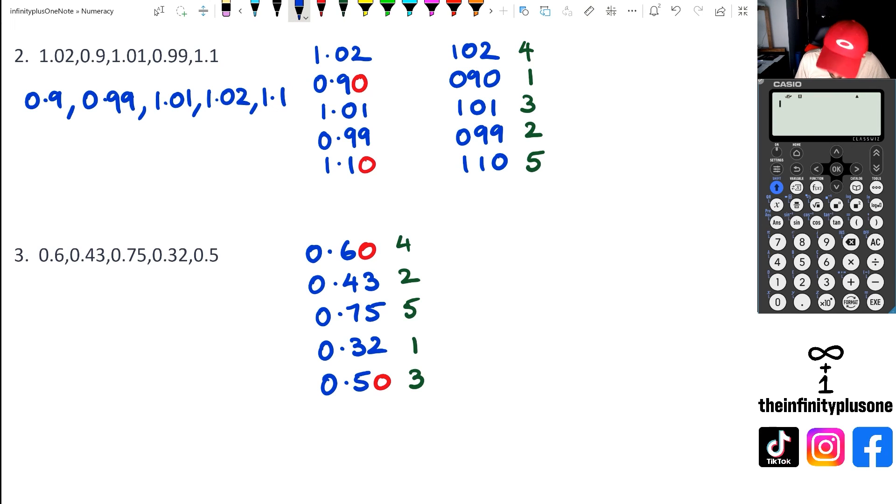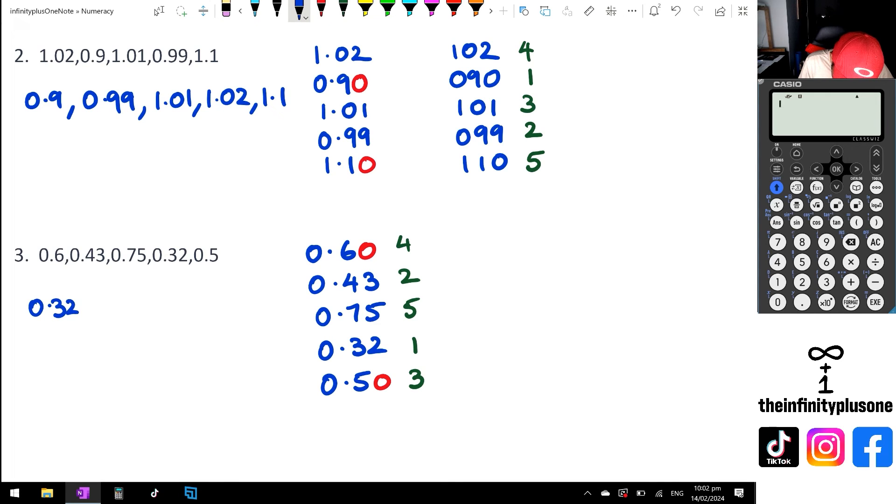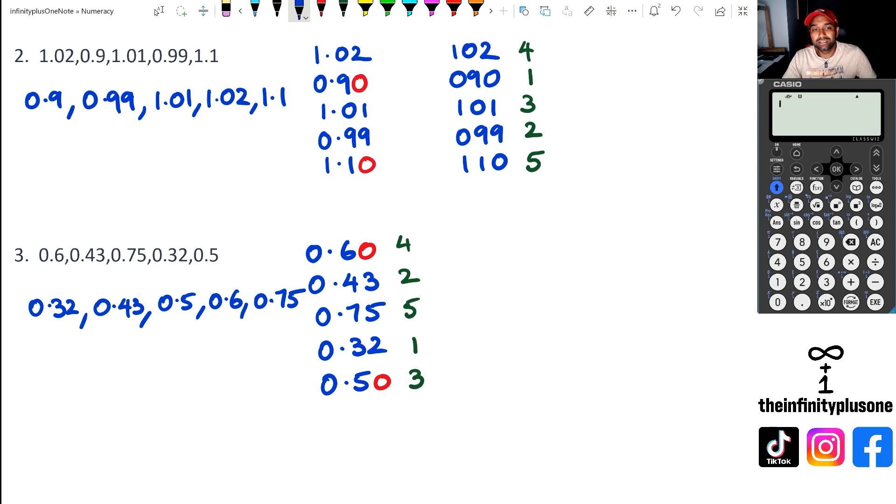I can now write these decimals in order from smallest to largest: 0.32, 0.43, 0.5, 0.6, and 0.75. So as you can see folks, this is just place value, but understanding that a lot of people get confused with 0.6 and 0.60.